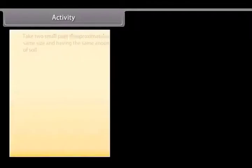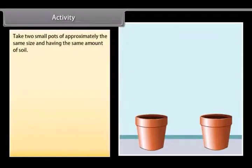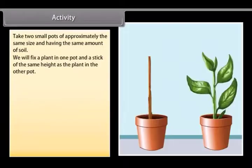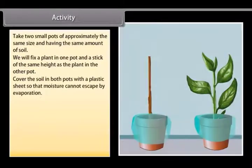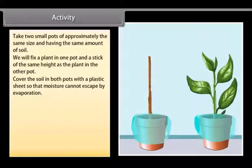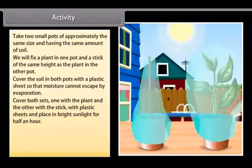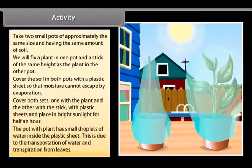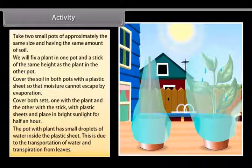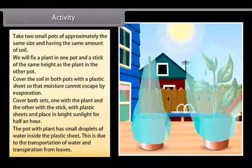Activity. Take two small pots of approximately the same size and having the same amount of soil. We will fix a plant in one pot and a stick of the same height as the plant in the other pot. Cover the soil in both pots with a plastic sheet so that moisture cannot escape by evaporation. Cover both sets, one with a plant and the other with a stick, with plastic sheets and place in bright sunlight for half an hour. The pot with plant has small droplets of water inside the plastic sheet. This is due to the transportation of water and transpiration from leaves.